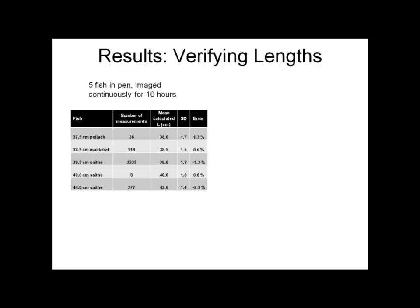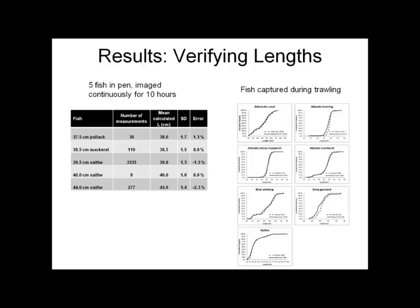We're also able to measure lengths, and we've tested this in two ways. First, we had five fish in a pen and let them freely swim back and forth in front of the camera over 10 hours — we know the length of each fish, and we were able to compare the mean length calculated from the images against the actual length, achieving within 2.3% for all individuals. When working on a survey in a trawl, we can't link an individual fish with an individual image, so here we compare length frequency distributions. The hashed lines are what was physically measured from the cod end catch, and the solid line is the distribution calculated from the images — we get very good fits of the sampled population.